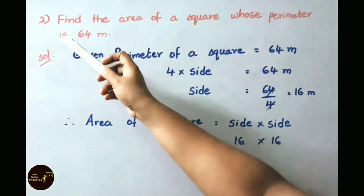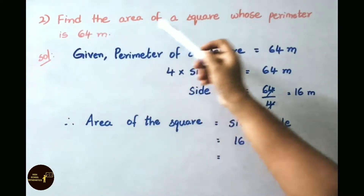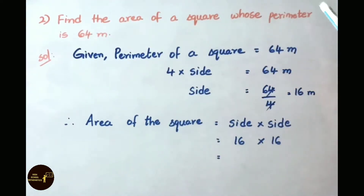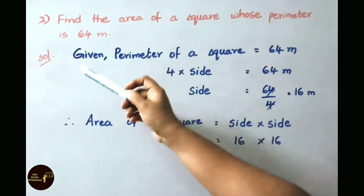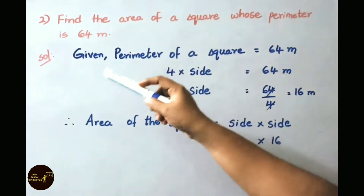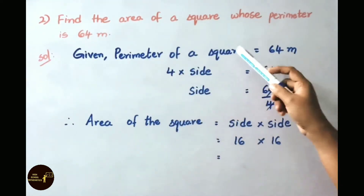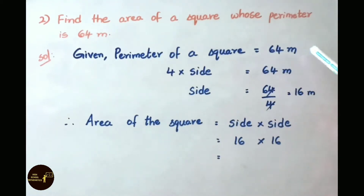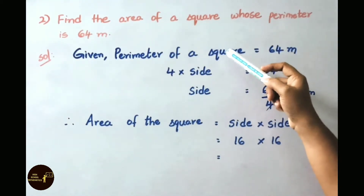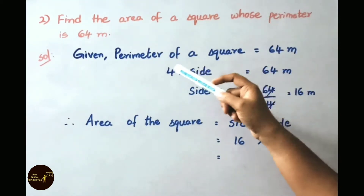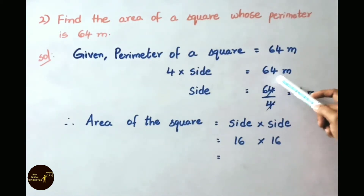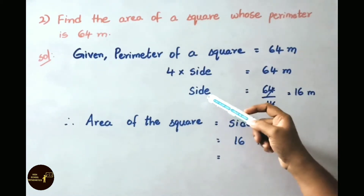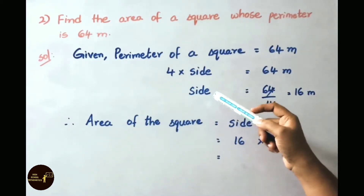See now question number 2. Find the area of a square whose perimeter is 64 m. Given: perimeter of a square equals 64 m. We know the perimeter of a square formula is 4 into side. That equals 64 m. Now let us find the side of the square.